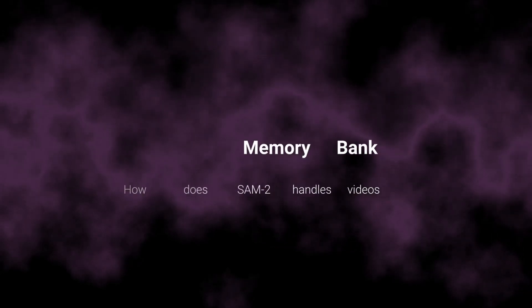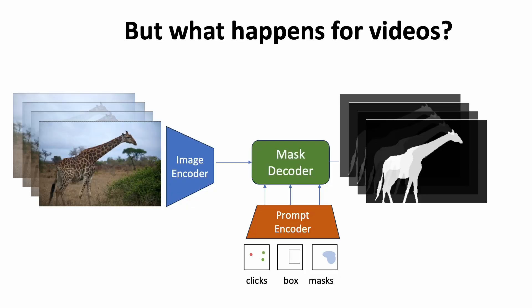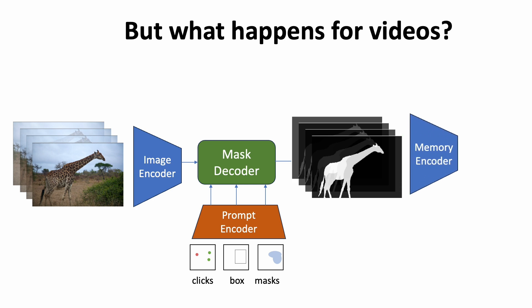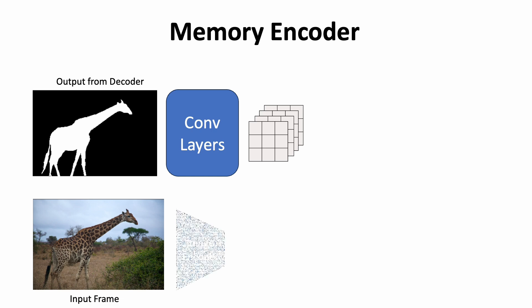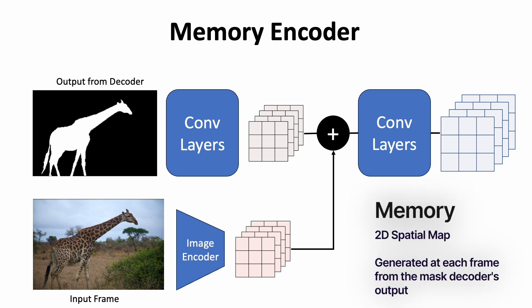SAM2 introduces a memory bank to track information about already processed video frames. After the mask decoder generates output masks by combining prompt and image encodings, the output mask is passed through a memory encoder to obtain a memory embedding. The output masks are down-sampled using convolutional layers, and the unconditional image encoding is added to this output, then passed through lightweight convolutional layers to fuse all information. The resulting spatial feature map is called the memory — a representation of the original input frame and the generated masks from a given time point in the video.